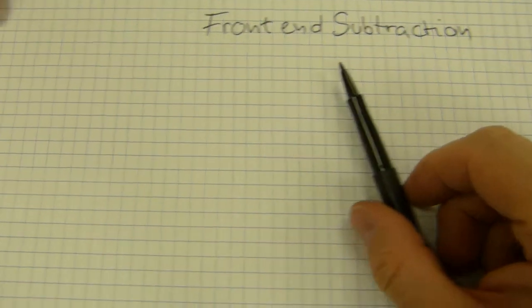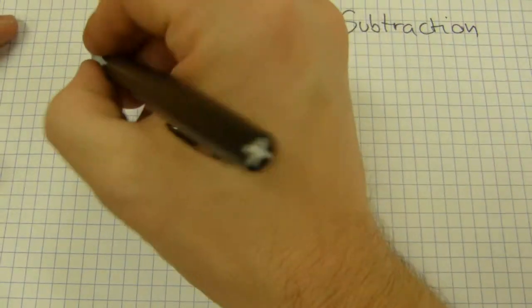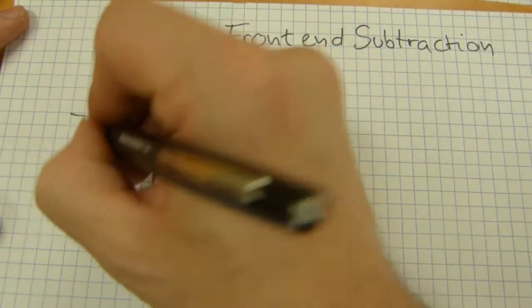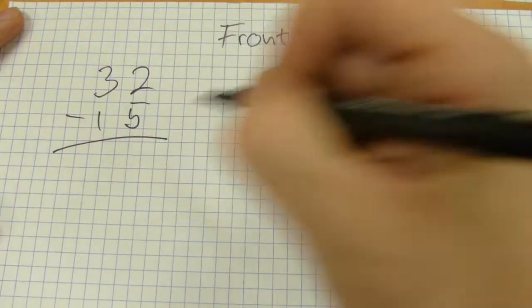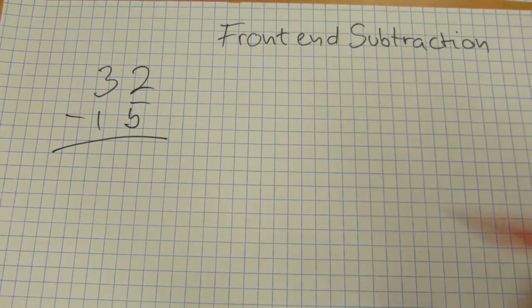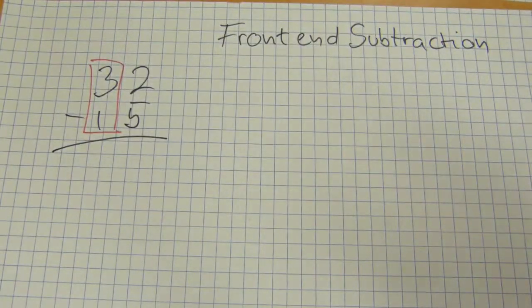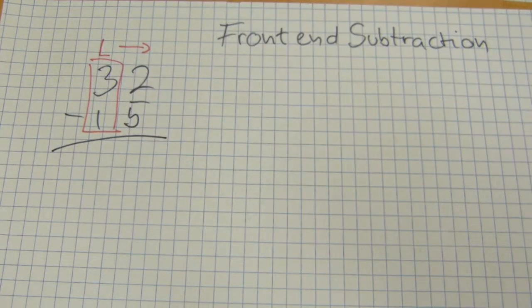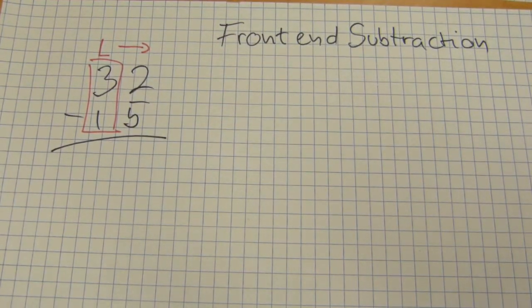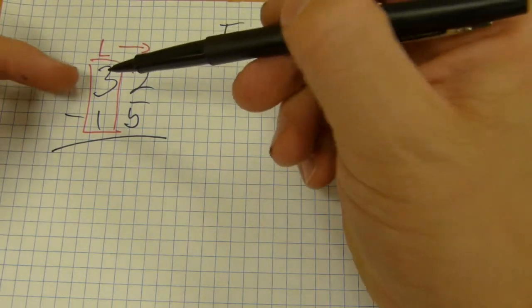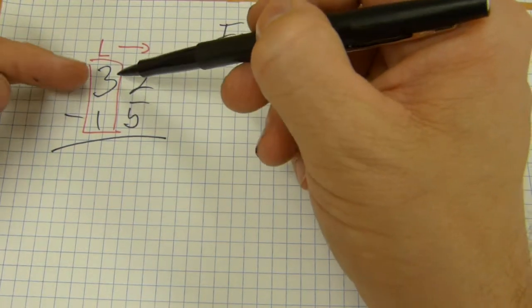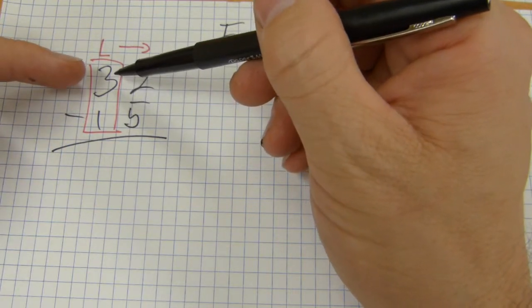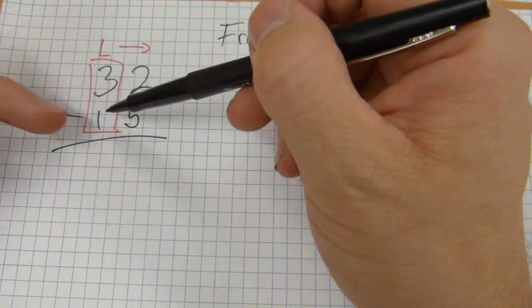Its name is front-end subtraction because we start at the front. Say, how about a 2-digit number such as 32 minus 15. Front-end subtraction starts at the front, meaning on the left, because in English we usually start on the left and proceed towards the right. So you don't start in the ones column. The first one is 3 minus 1, but this is in the tens column, so this is actually 30 minus 10.